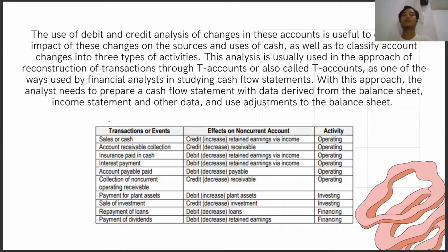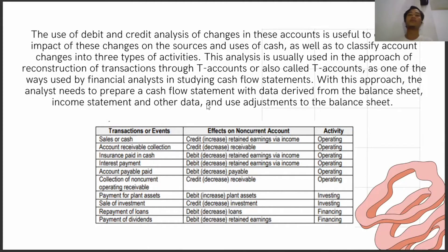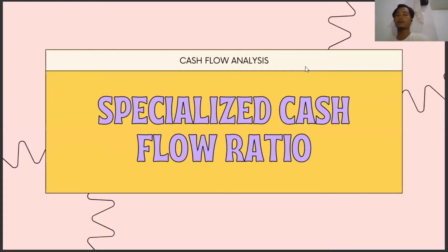The use of debit and credit analysis in this account is useful to check the impact on the source and use of cash, as well as to classify content into the three types of activities. This analysis is usually used in the approach of reconstruction of transactions — also called the T-account approach — one of the widely used methods by financial analysts in studying cash flow statements. With this approach, the analyst needs to prepare a cash flow statement with data verified from the balance sheet, income statement, and other data, using adjustments to the balance.